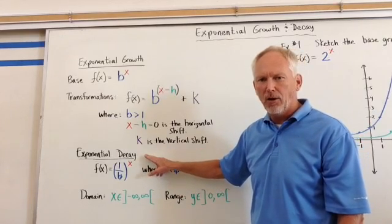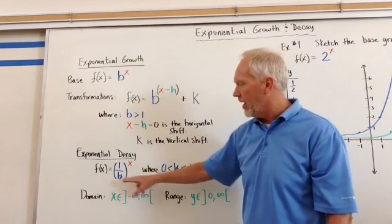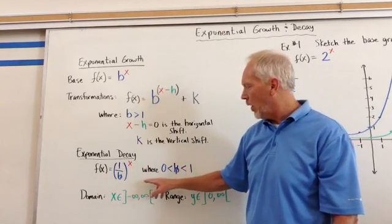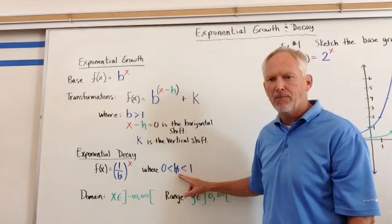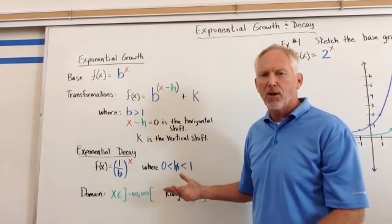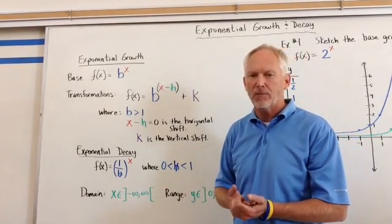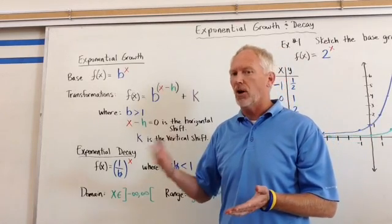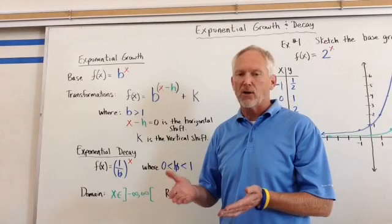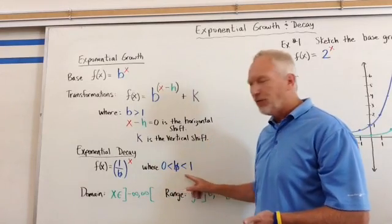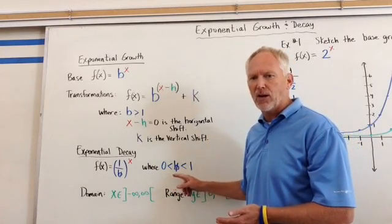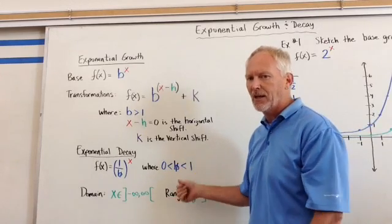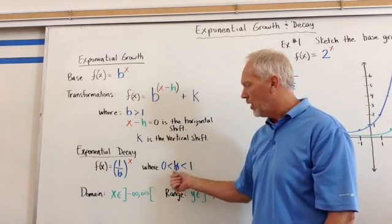Now if we want a decay model, then what we're looking at is f(x) equals 1 over b to the x, where b is actually in between 1 and 0. In other words, b is some fraction. You can have a fraction like 1 half, but you can also have a fraction like 3 halves. If we have a fraction like 3 halves, that does not fit this criteria. 3 halves is actually greater than 1, so be careful when you see just fractions. We want to make sure that it is in between 1 and 0.